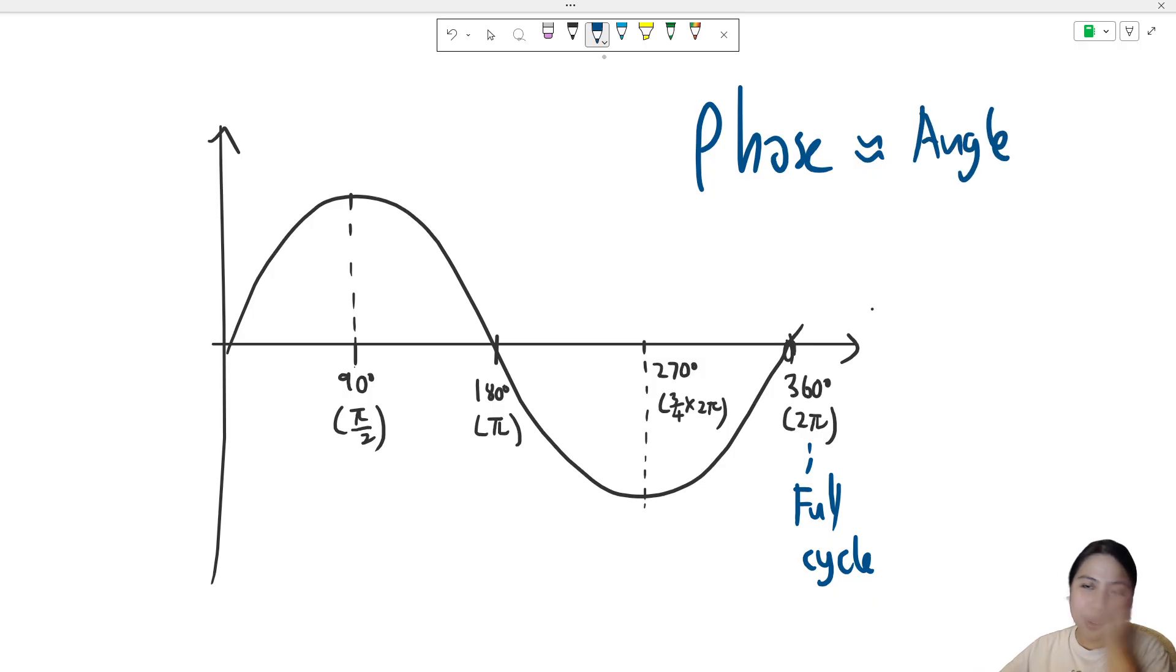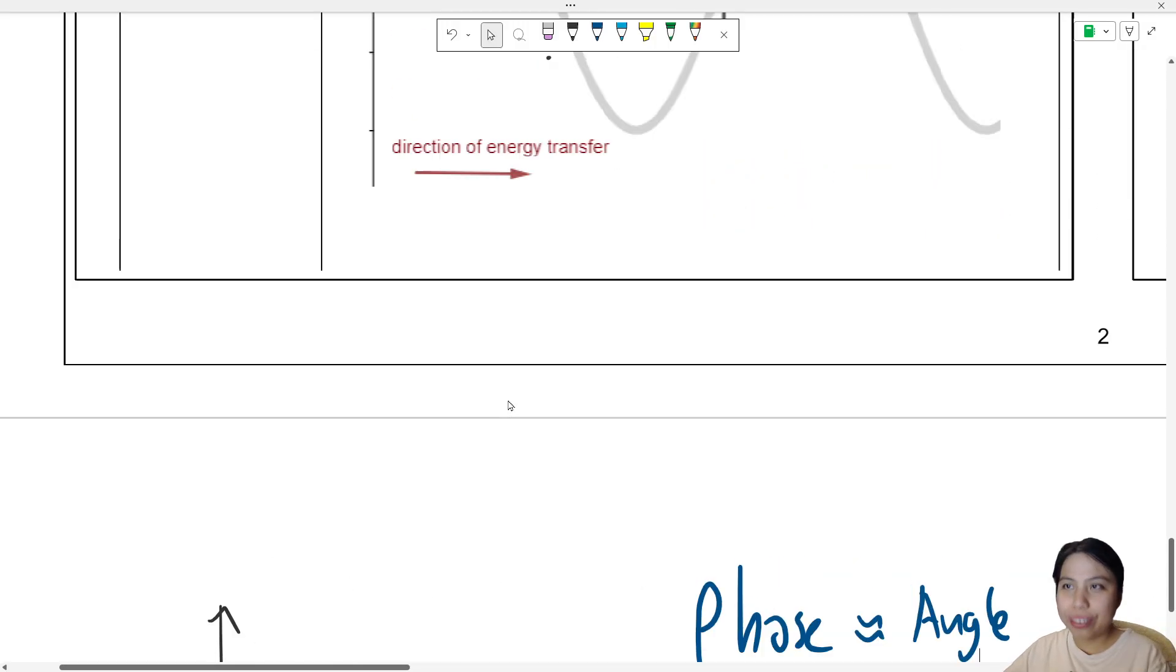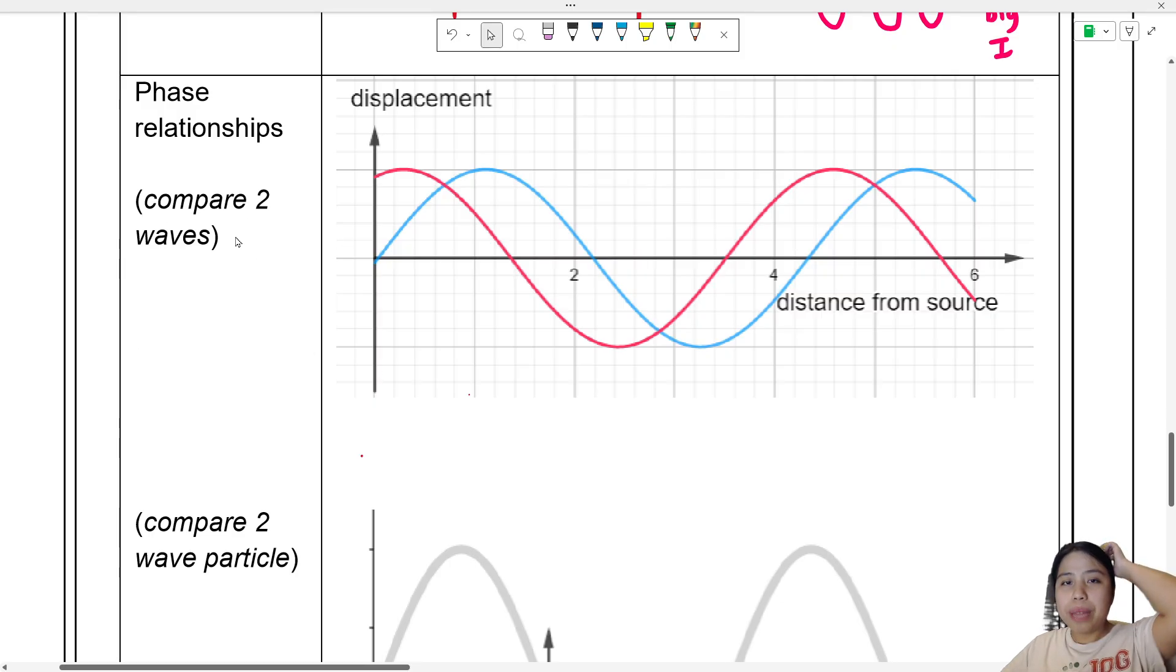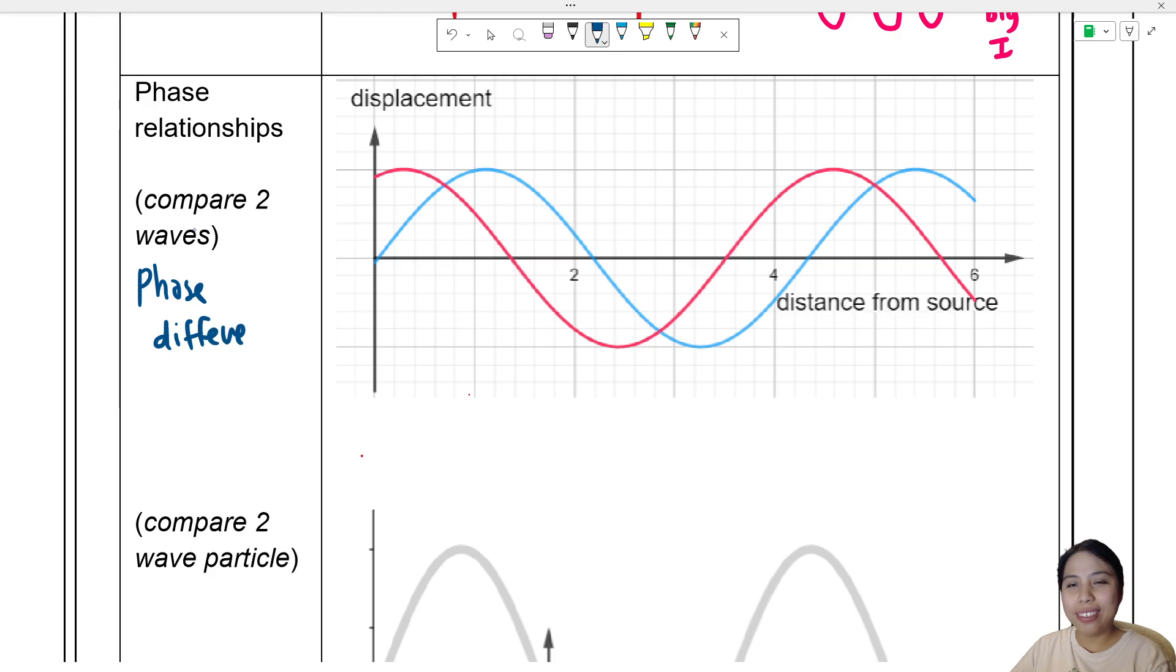Now with that in mind, go back to this phase relationship. Sometimes they'll ask you to compare two waves and we need to find this thing called the phase difference. Okay, we use the angle, the symbol φ for phase, and the angle - sometimes we use degree, sometimes we use radians.